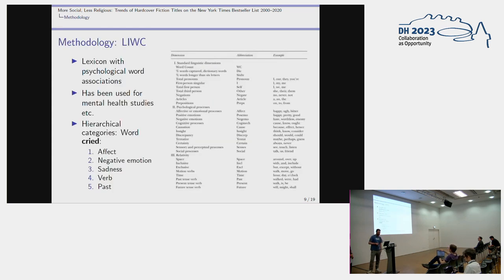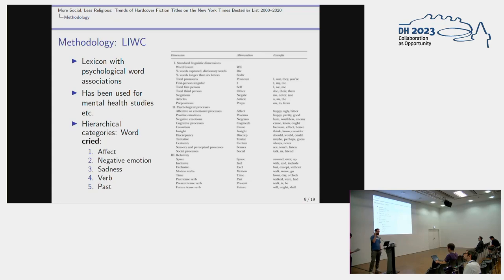The method uses a lexicon called LIWC — the Linguistic Inquiry and Word Count by Pennebaker. This is a lexicon with psychological word associations used for mental health studies, for example to detect depression or suicide. Words are organized in hierarchical categories. For example, the word 'cried' falls under affect, negative emotion, sadness, and also verb and past tense. Other categories include space (around, over, up), social processes (talk, us, friend), tentative speech (maybe, perhaps, guess), and causative speech (because, effect, hence).